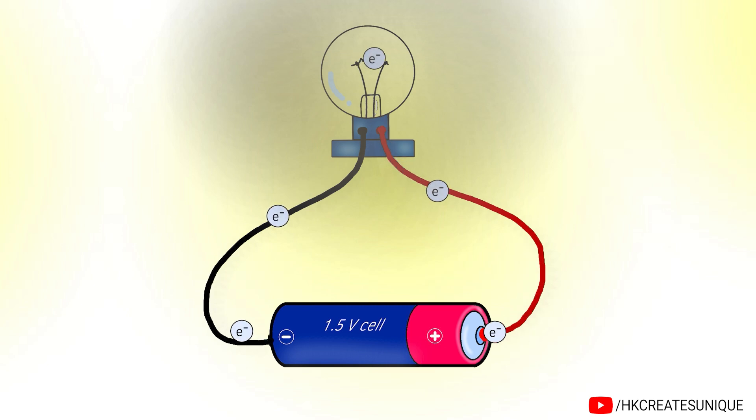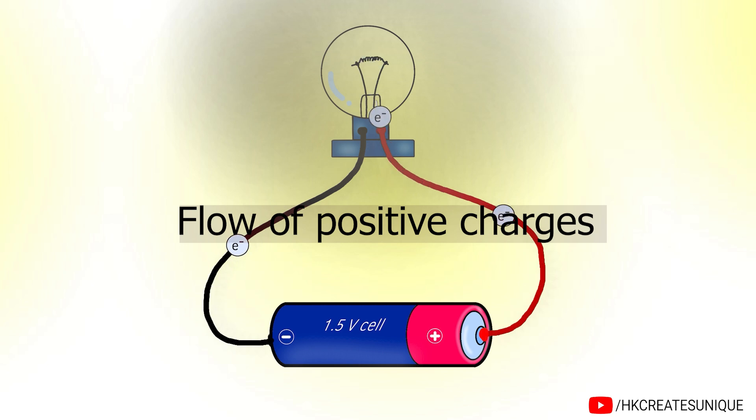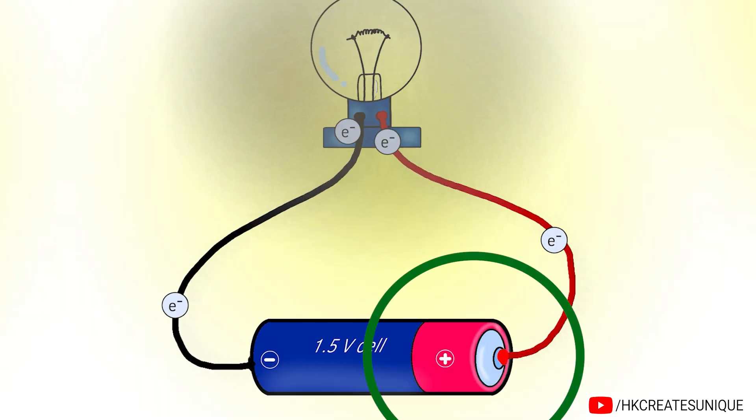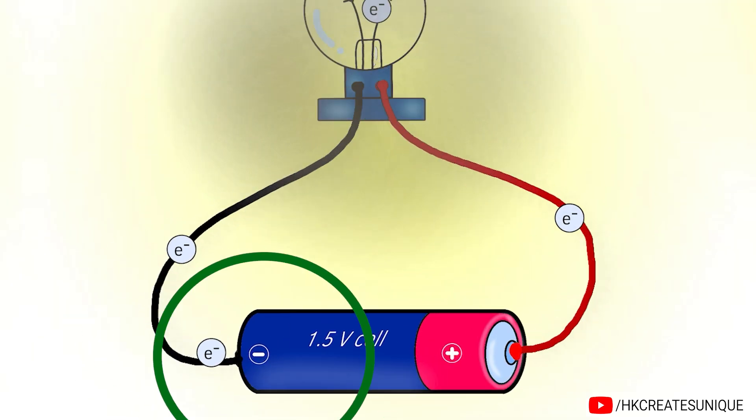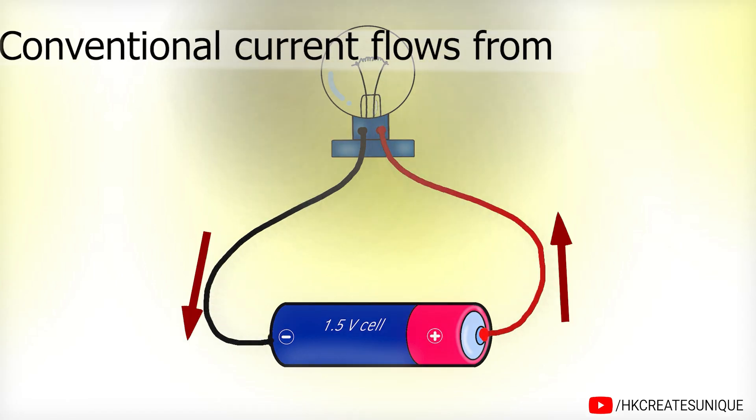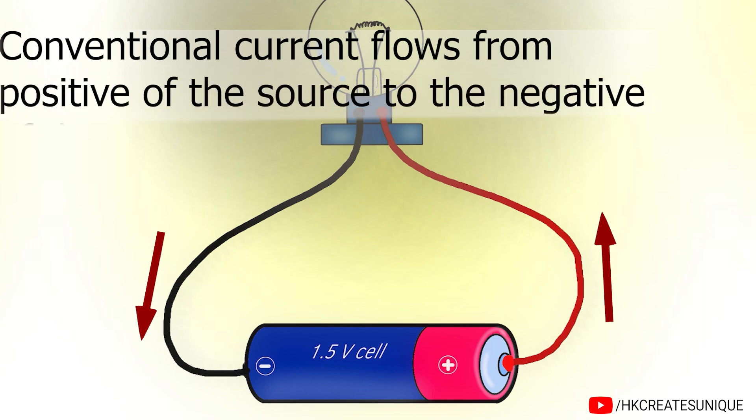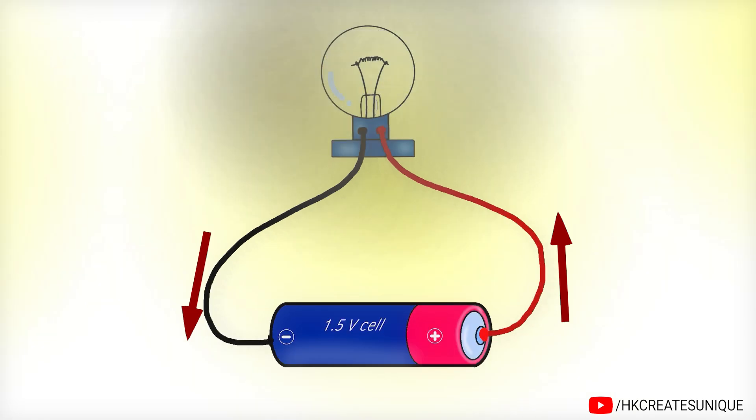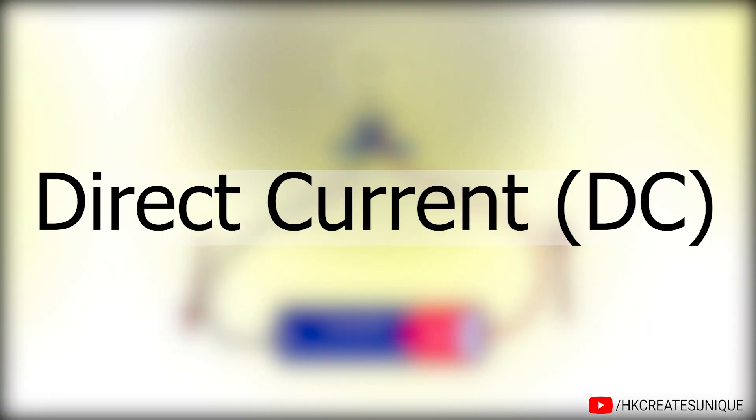But scientists in the past envisioned current as a flow of positive charges, that is from the positive terminal of the source to the negative terminal of the same source. This positive to negative current convention stuck even after the discovery of electrons. So remember, conventional current flows from positive of the source to the negative of the same source. And this type of current is called direct current.